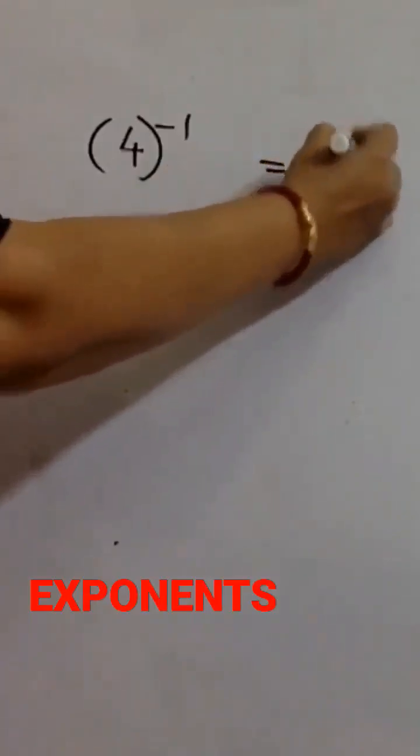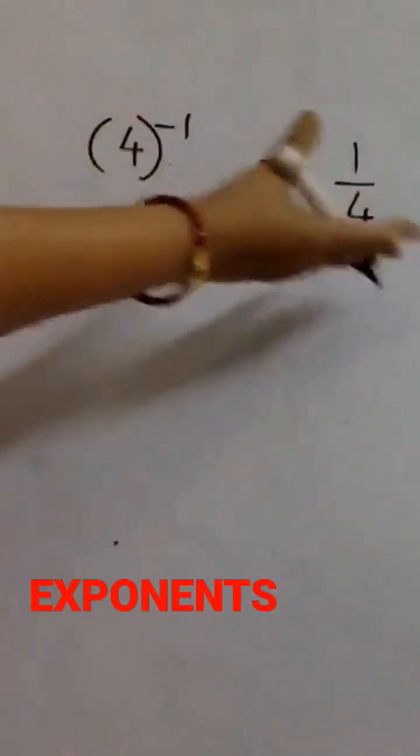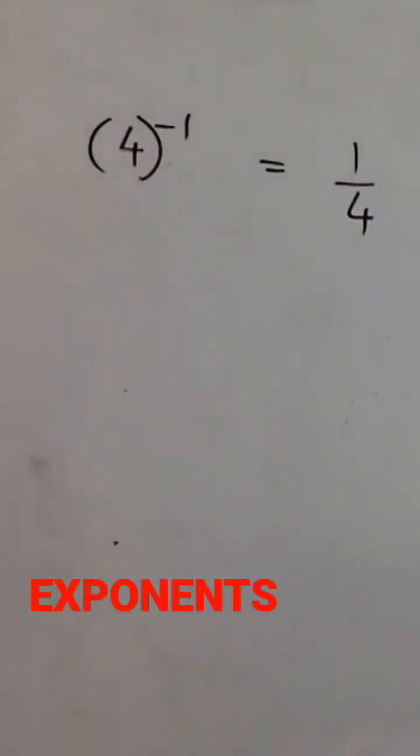This is 1 by 4, and it becomes to the power 1. That is it. You don't have to write the 1. That is the usefulness of this numerator-denominator change.